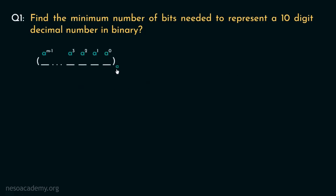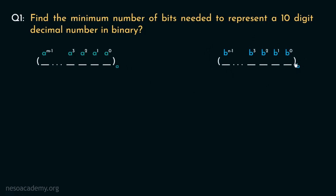Consider an m-digit number of base a. The place values would be a raised to the power 0, a raised to the power 1, a squared, a cubed, up to a raised to the power m minus 1. Now consider an n-digit number of base b. The place values would be b raised to the power 0, b raised to the power 1, b squared, b cubed, and so on, up to b raised to the power n minus 1.